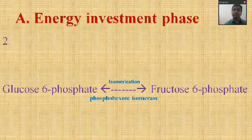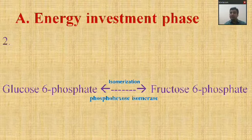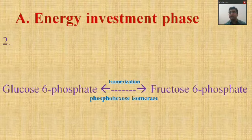The next reaction in the energy investment phase is reaction two: glucose-6-phosphate is converted into fructose-6-phosphate, catalyzed by the enzyme phosphohexose isomerase. These two compounds are isomers — glucose-6-phosphate and fructose-6-phosphate — which is why this reaction is called isomerization. It is a reversible reaction.